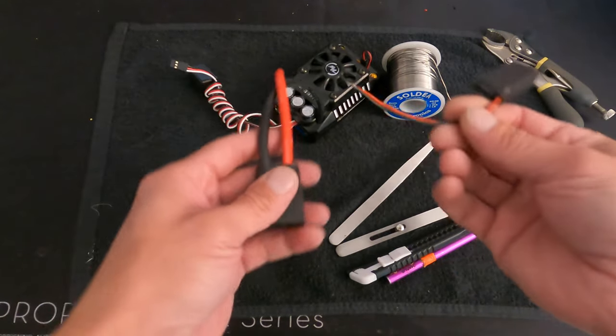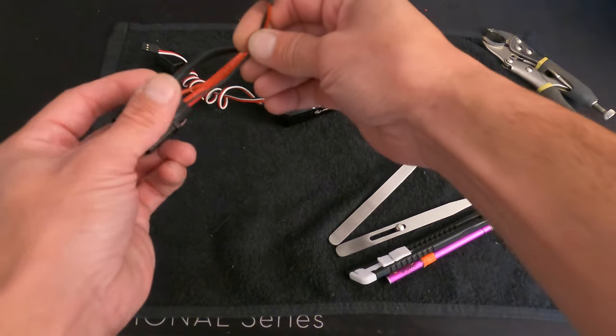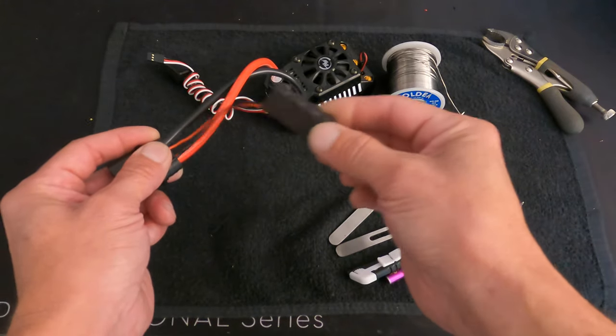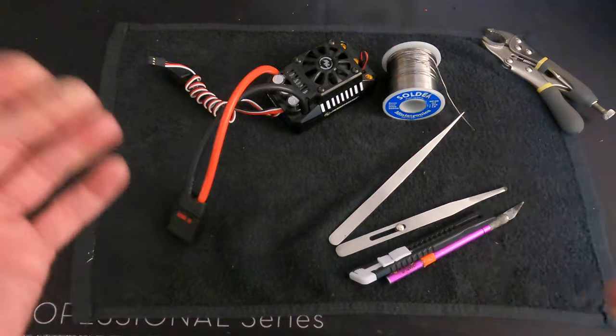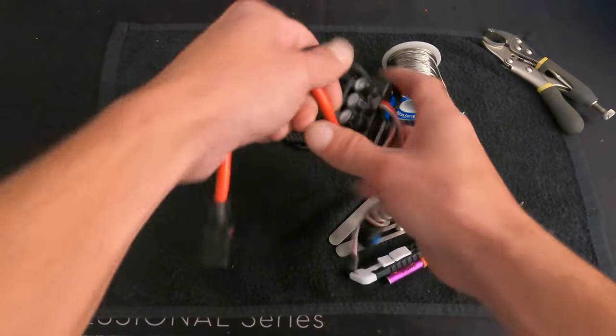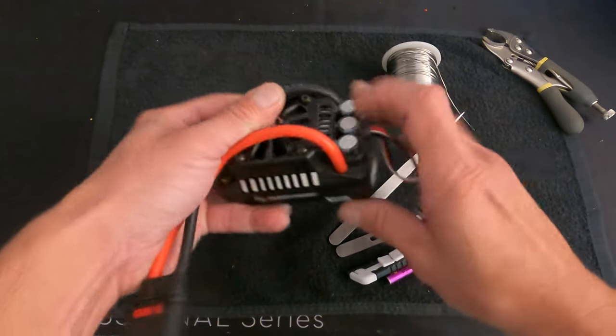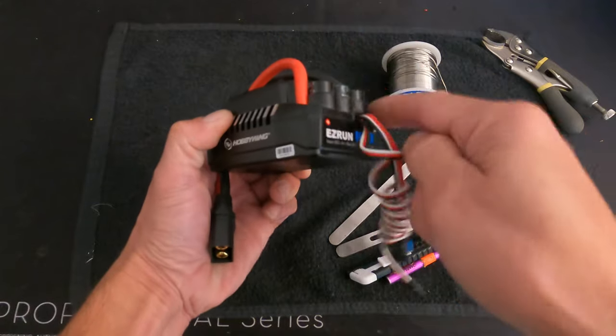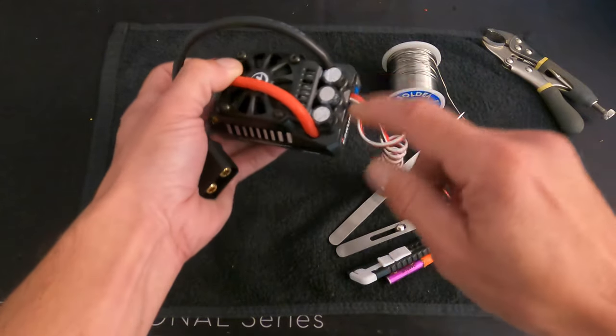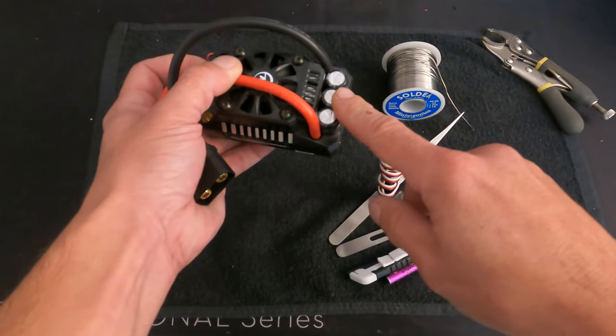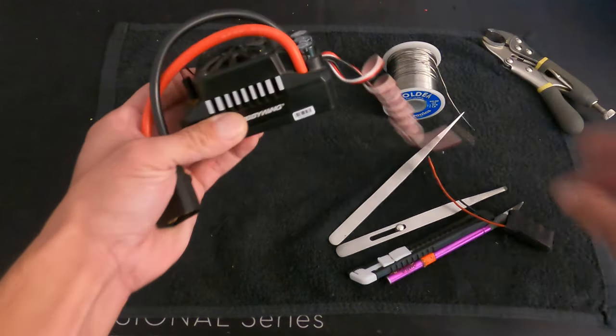And a lot of times I see folks that take the power capacitor sets and they put them on their battery plugs. Well, it's still installed, it's going to do something. It's not going to work correctly. Power capacitors on the speed controls are right on the power board immediately next to where the power wires go, because that is when power capacitors are the most effective at protecting the speed control.